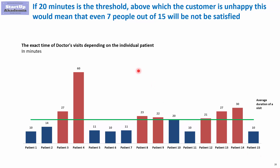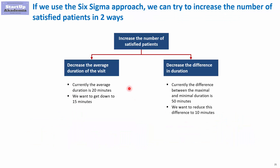Once we establish this picture — knowing people are unhappy and knowing the extent of the defects — Six Sigma would look at two routes. The first route is to decrease the average duration of the visit. We would try to go down from the current average of 20 minutes to, for example, 15 minutes. This should increase the number of happy customers served within the 20-minute threshold.